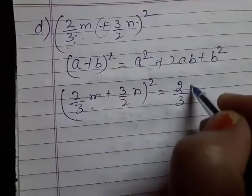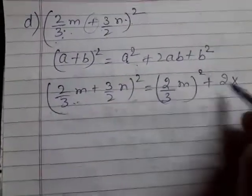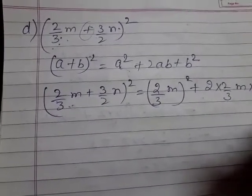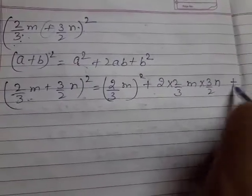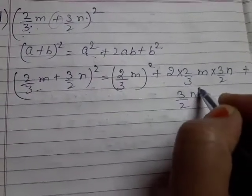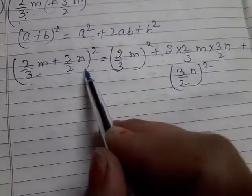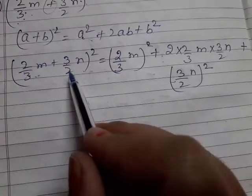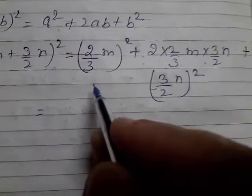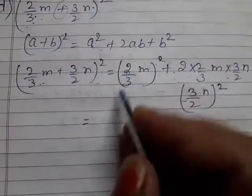So (2/3 m + 3/2 n)² equals a² plus 2ab plus b². Here a is 2/3 m and b is 3/2 n. We compute a² which is (2/3 m)² = 4/9 m², then 2ab = 2 × (2/3) × (3/2) mn, and b² = (3/2 n)².